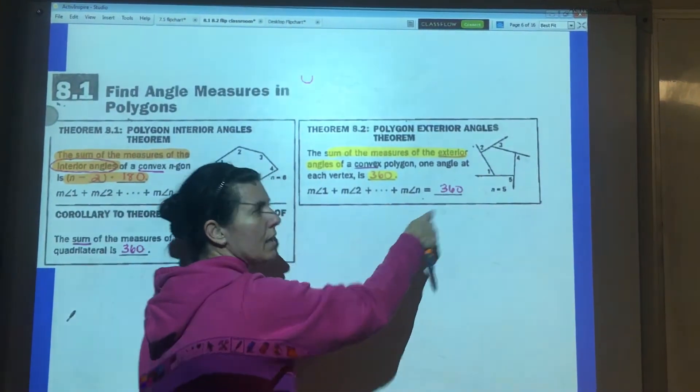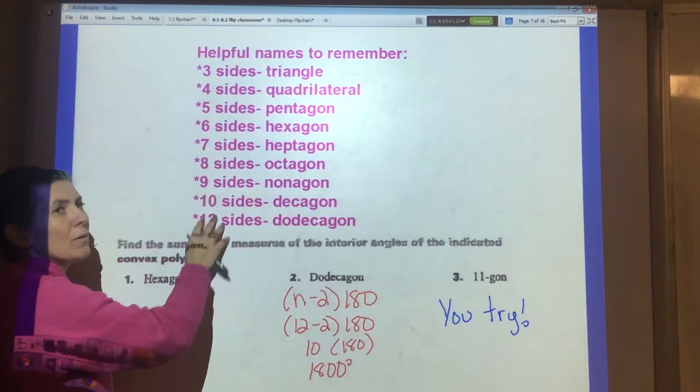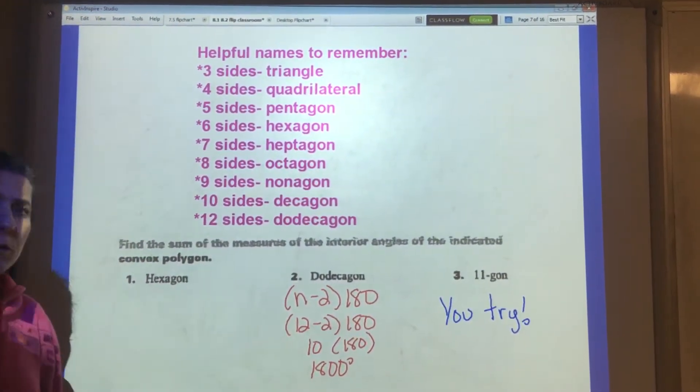The sum of all those outside angles, whether it be a three-sided figure or a ten-sided figure, the sum is always 360. That's an easy one to remember. Let's look at a few examples here. These are some ones that you need to be familiar with. It's going to make chapter 8 a little easier for you if you know those.